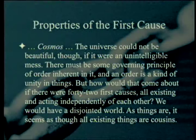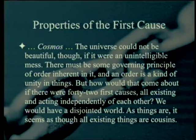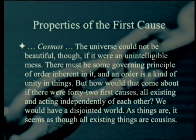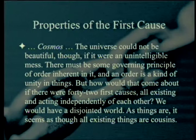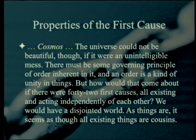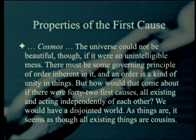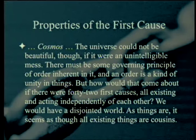The universe could not be beautiful if it were an unintelligible mess. 'Cosmos,' meaning the universe in Greek, also means beauty. There must be some governing principle of order inherent in it, and an order is a kind of unity in all things. But how would that come about if there were 42 first causes, all existing and acting independently of each other? We would have a disjointed world. As things are, it seems as though all existing things are cousins.